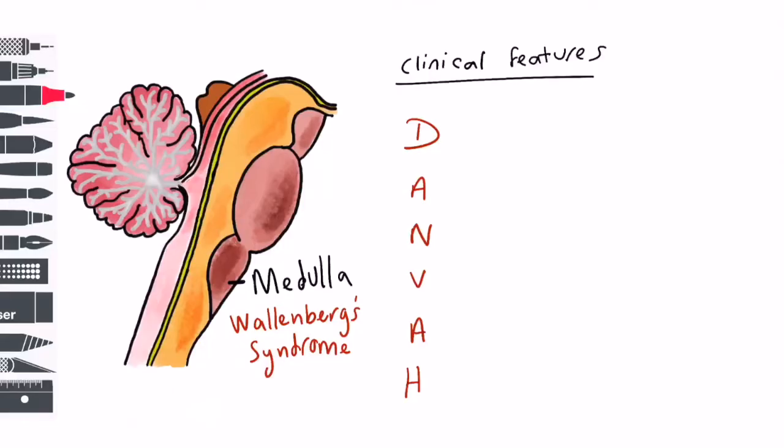This clinical picture can be remembered with the mnemonic DANVIR. This stands for dysphagia, ataxia, nystagmus, vertigo, anaesthesia, and Horner's syndrome.